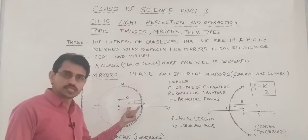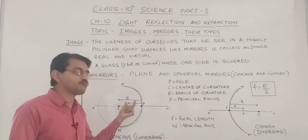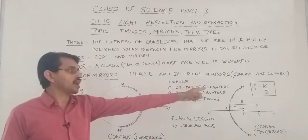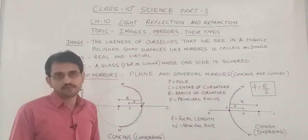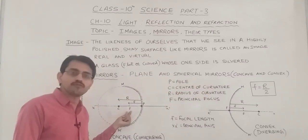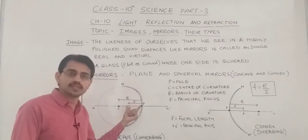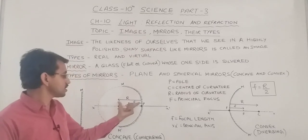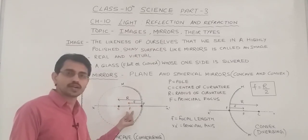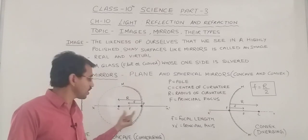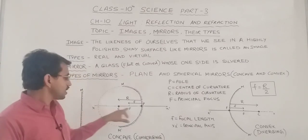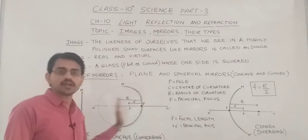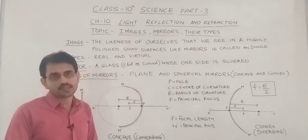The distance of the principal focus from the pole of the spherical mirror is called the focal length. The relationship between the radius of curvature R and focal length f is: f = R/2. The principal focus F (capital letter) is different from the focal length f (small letter). Focal length is half of the radius of curvature because the principal focus is located exactly at the center between C and P. The imaginary line XX' that passes through the pole and center of curvature and is extended on either side is called the principal axis.